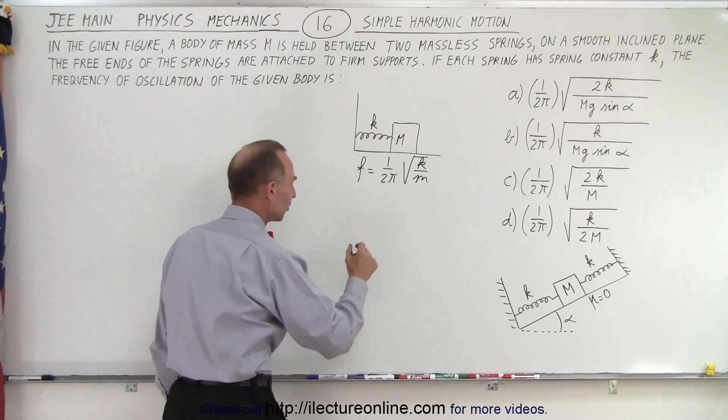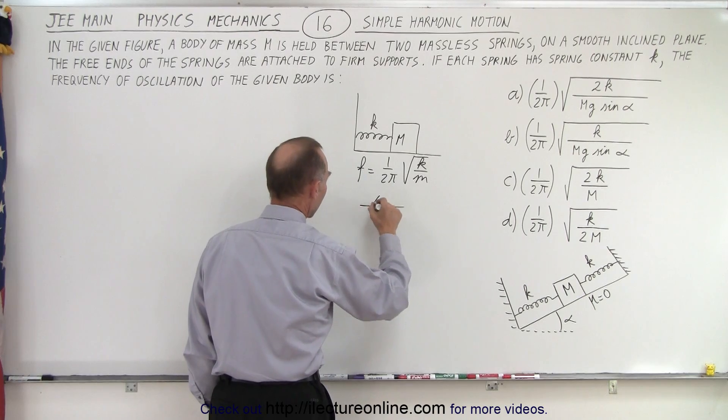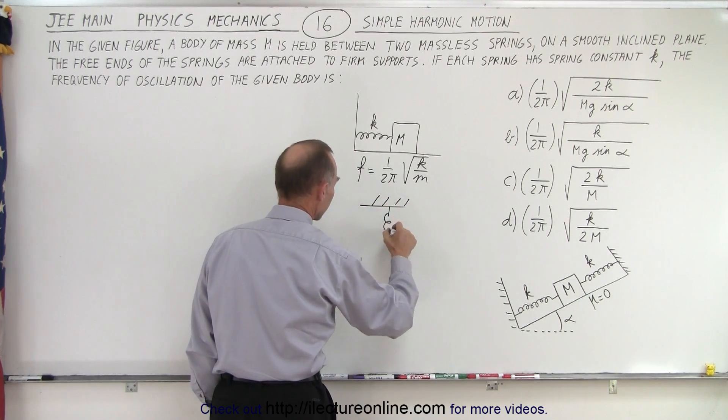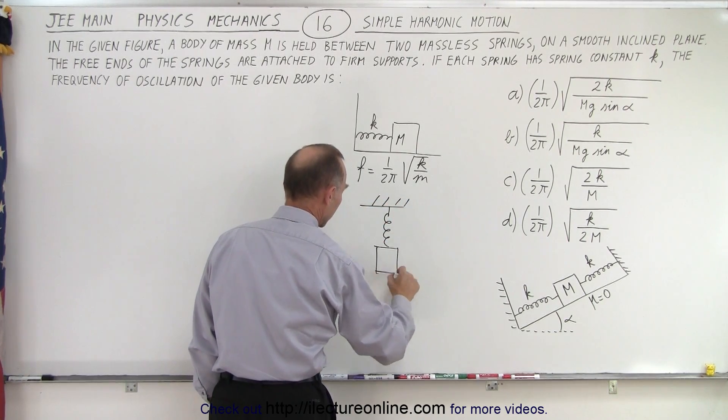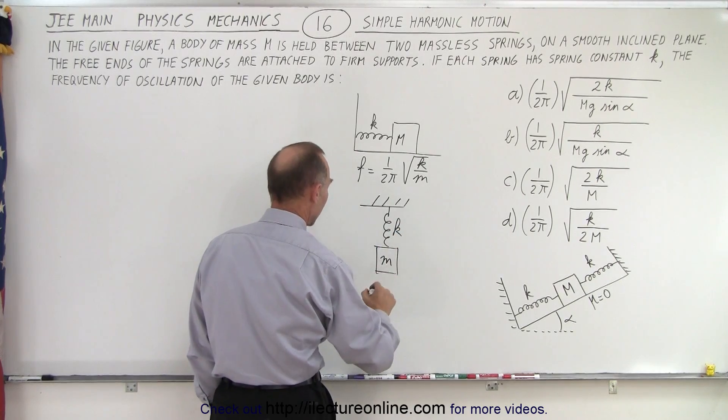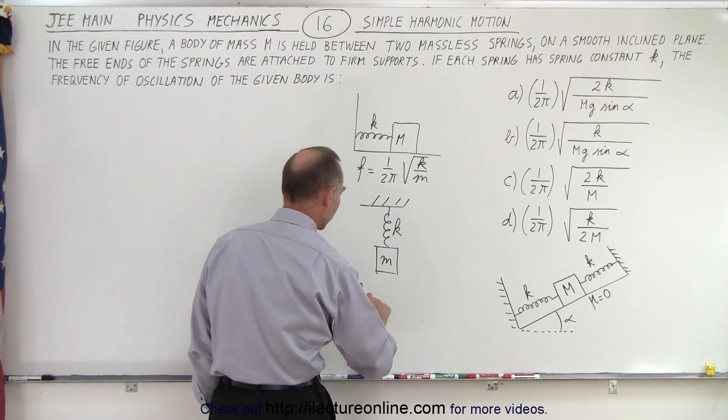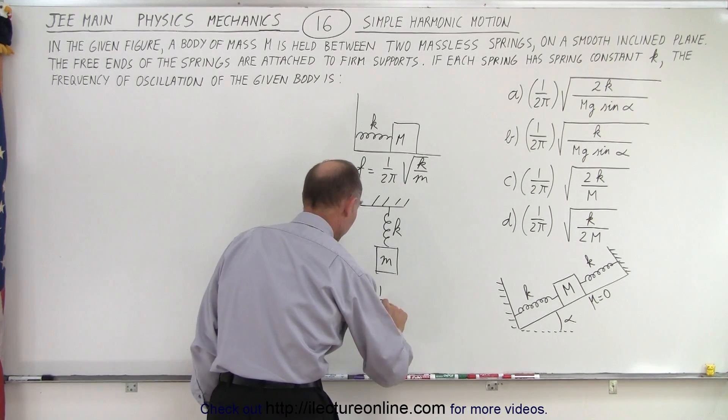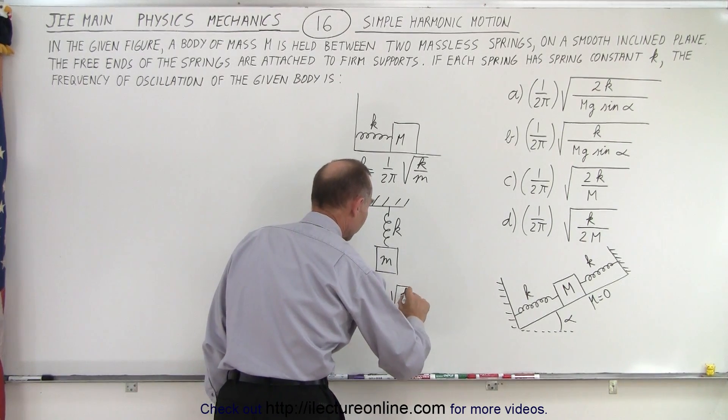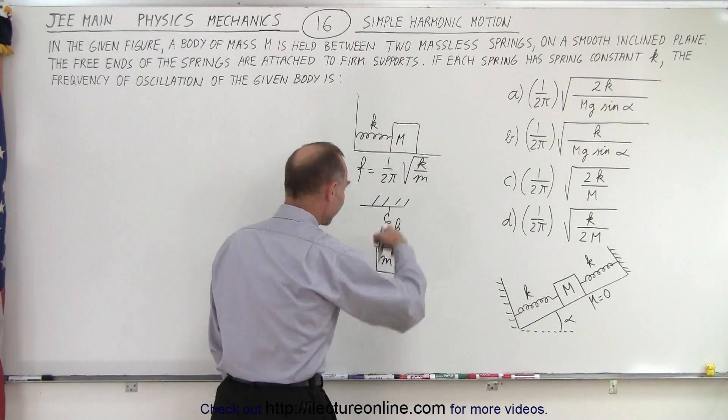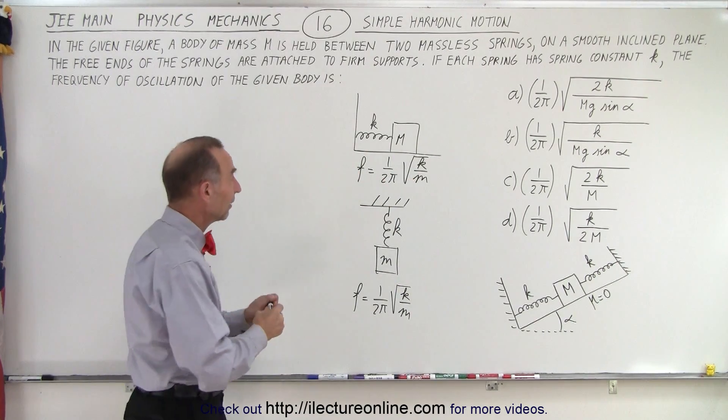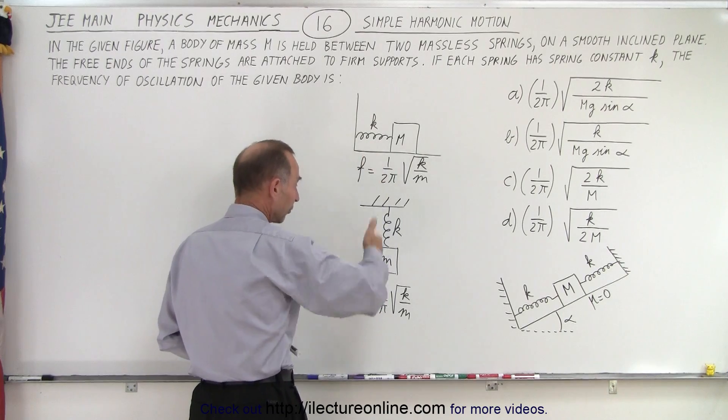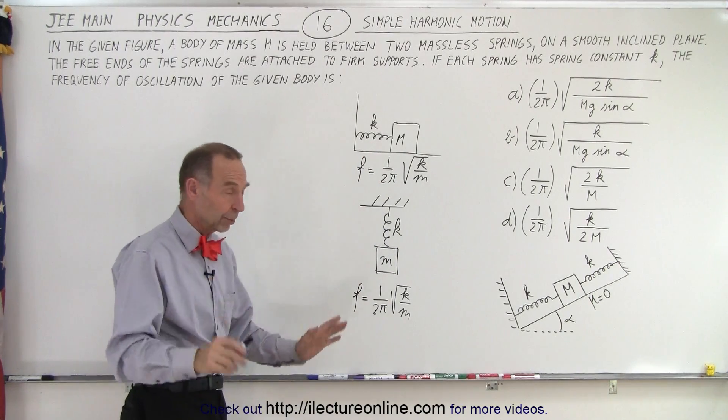But what if we have a situation that looks like this, where you have something hanging from the ceiling? And again, spring constant K, mass M, and you wonder, what is F equal to? And guess what? It's also equal to 1 over 2π times the square root of K over M. It's the exact same frequency, and it doesn't matter if it's horizontal motion or vertical motion. Simple harmonic motion, that is.